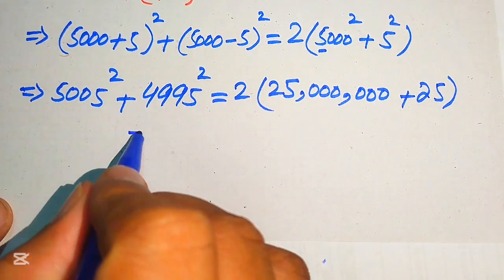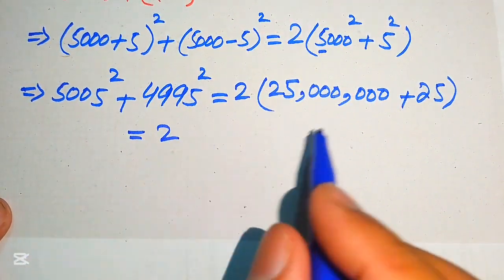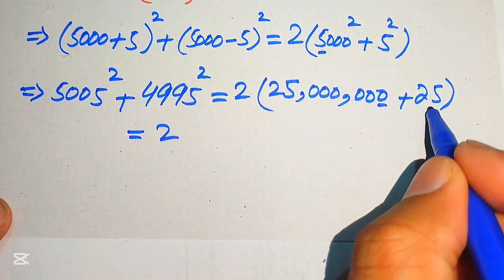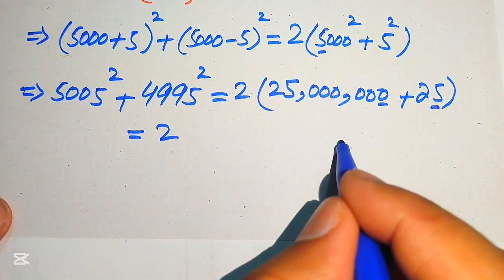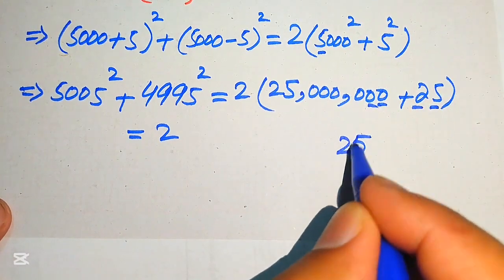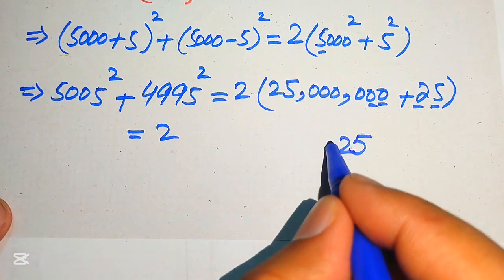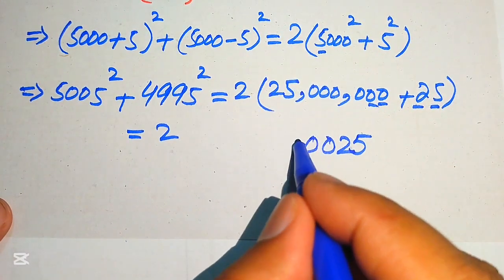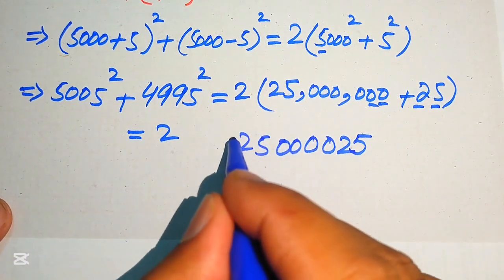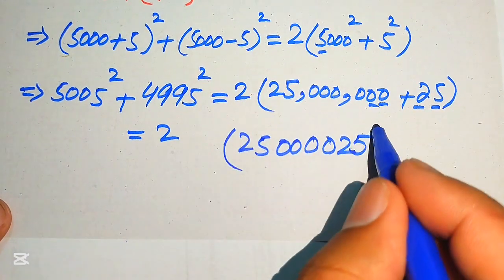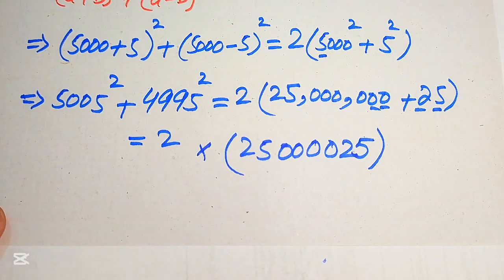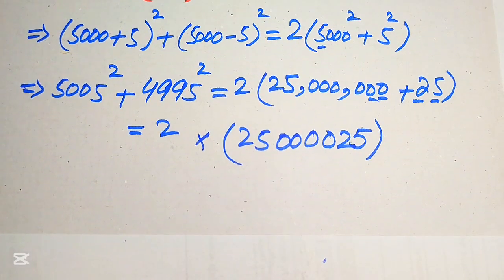In the next step we add these two values: 25,000,000 plus 25 equals 25,000,025. So we have 2 times 25,000,025, and we move forward to multiply.